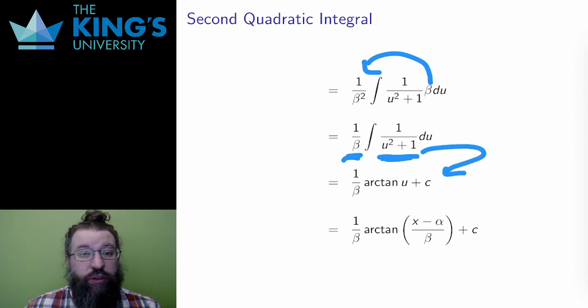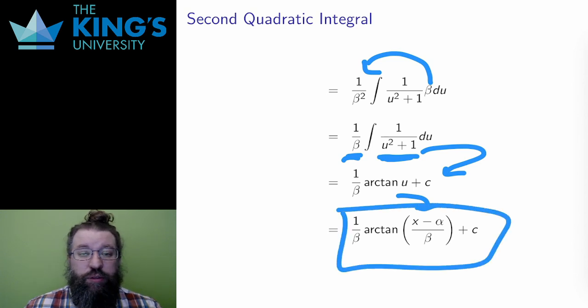What is left is an arctangent integral. The antiderivative of 1 over u squared plus 1 is the arctangent of u. And then replacing the substitution gives the final answer for this integral. 1 over beta times the arctangent of x minus alpha over beta plus a constant c.